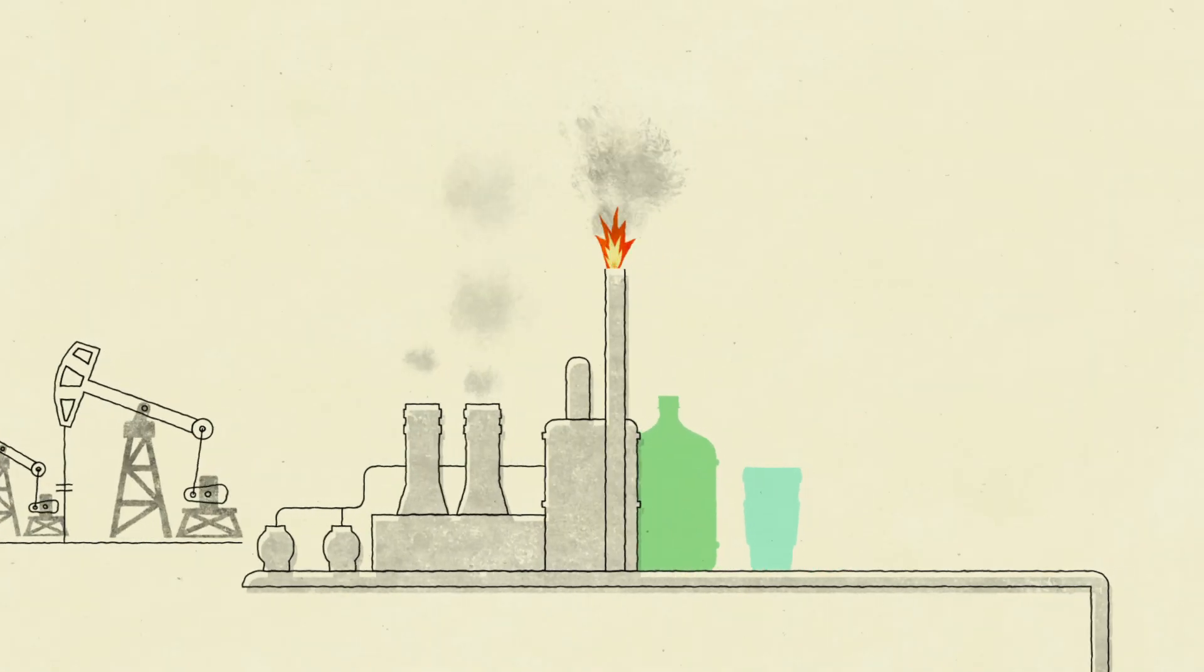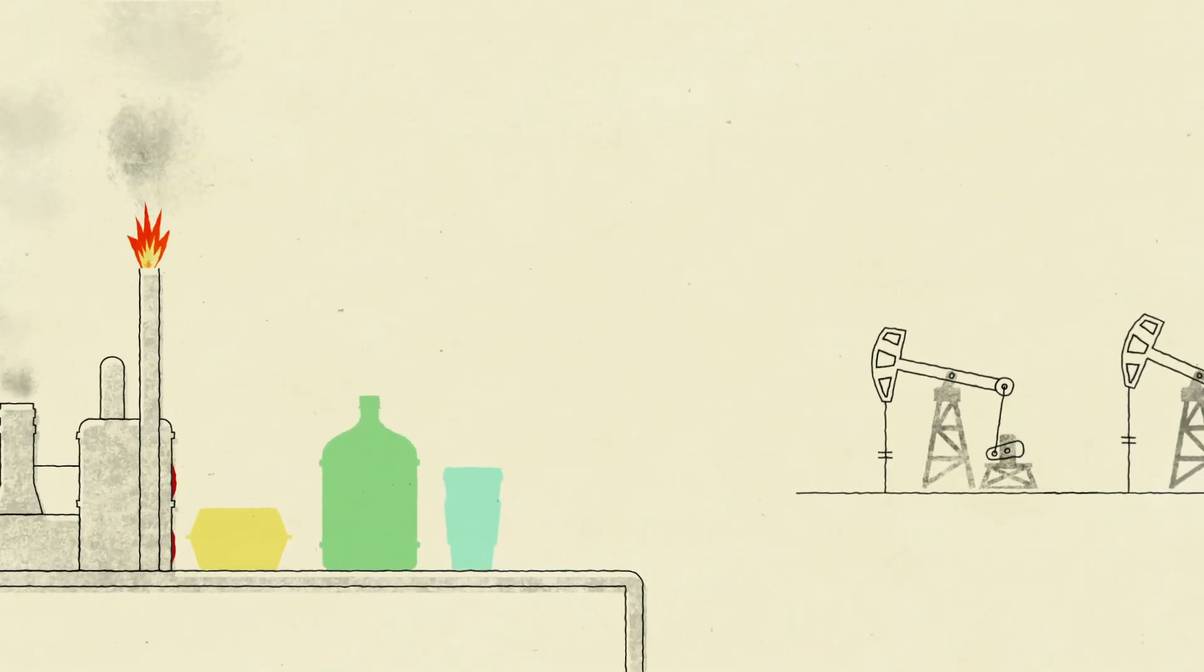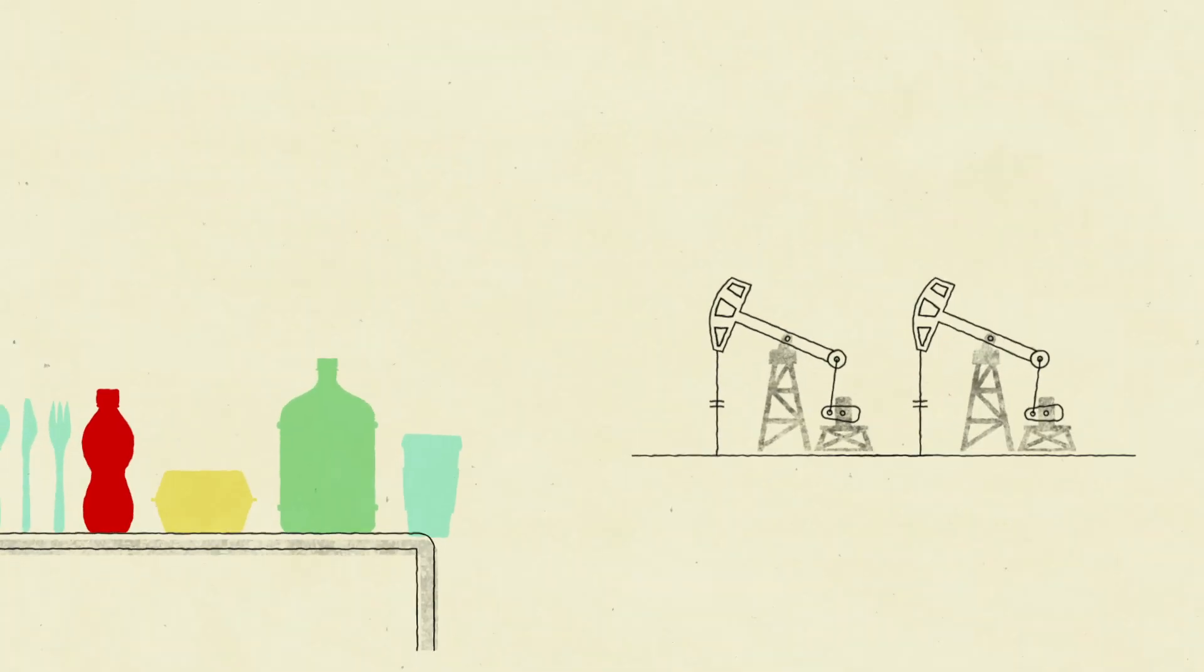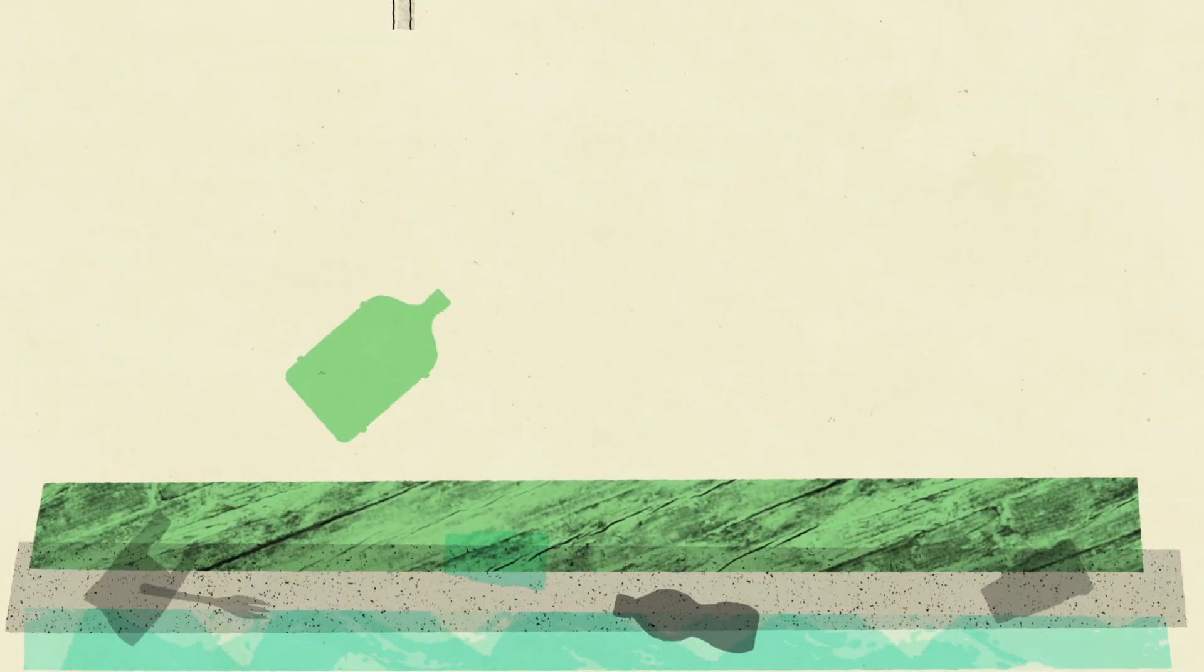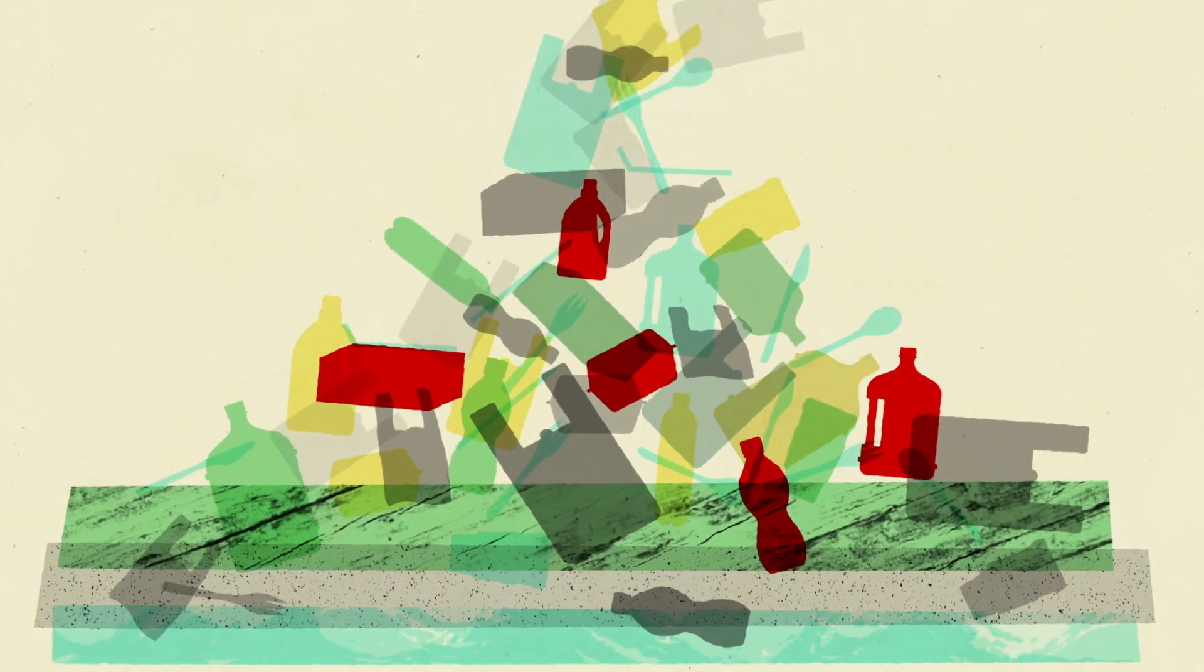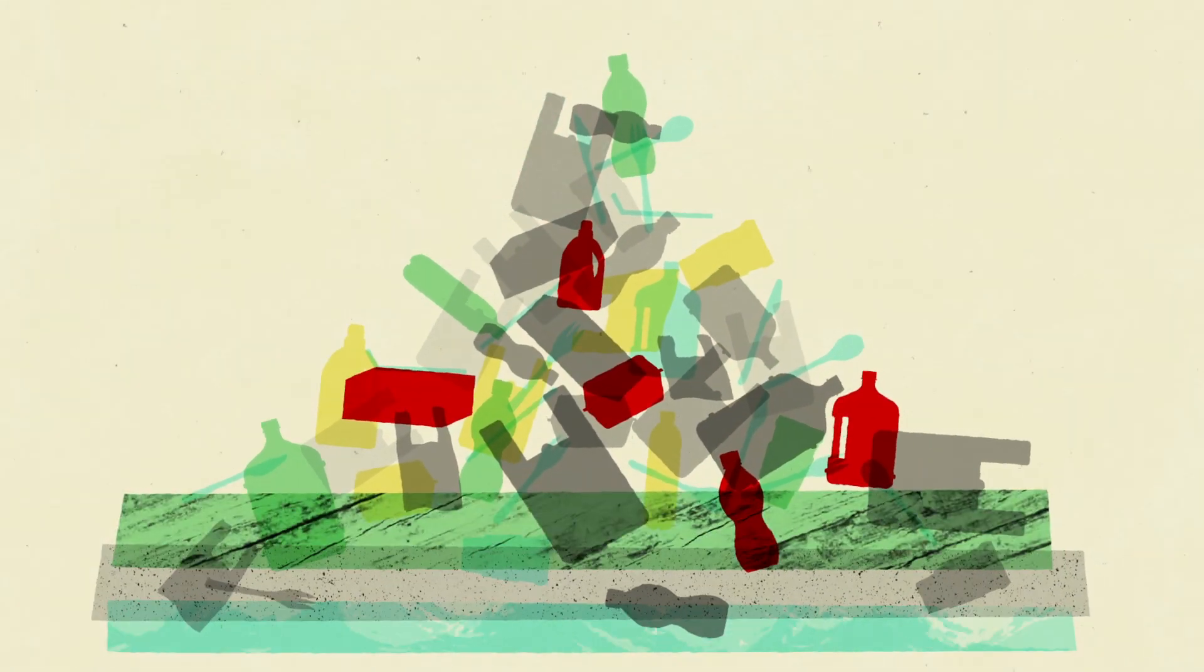4. The myth of chemical recycling props up the throwaway economy and diverts attention from the big changes needed for circularity. It means plastic producers can justify pumping out ever more plastic by claiming it can be chemically recycled.